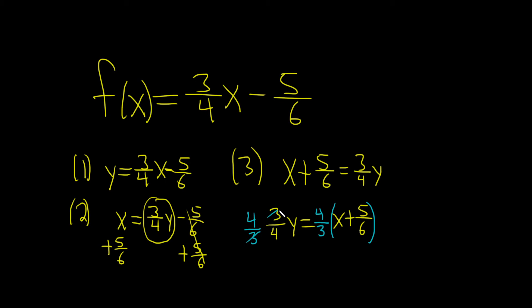These cancel. So you get y equals... So 4 thirds times x is just 4 thirds times x, and plus 4 thirds times 5 over 6.